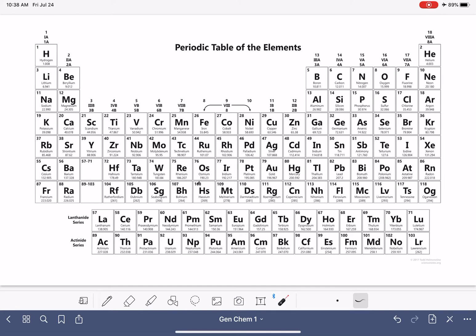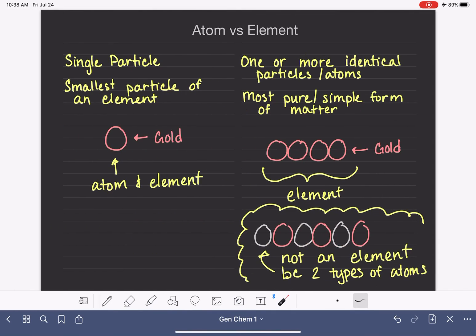So again, all of the elements are listed on the periodic table. Everything that is not an element is not on the periodic table. All atoms and all elements are on the periodic table.